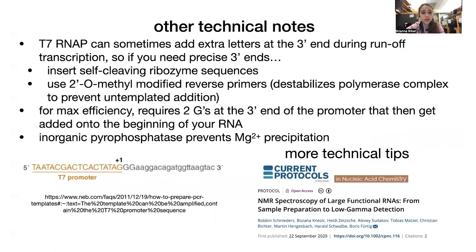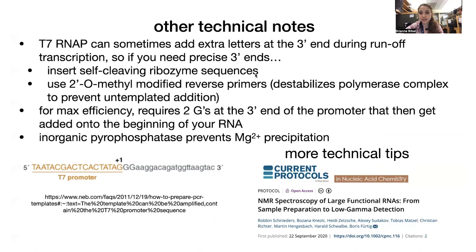Some final technical notes. T7 can sometimes add extra untemplated nucleotides at the 3' end during runoff transcription — when you're using a linear template without a T7 terminator. If you need precise ends, you can insert self-cleaving ribozyme sequences, which cause the RNA to cut itself off at the end, giving a defined end. You can also use 2'-O-methyl modified reverse primers, which destabilize the polymerase complex and prevent untemplated addition — the polymerase reaches those modified nucleotides, gets destabilized, and falls off before adding random letters.